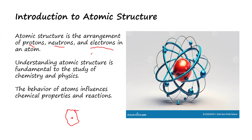So in the atomic structure, it is a structure that tries to show the arrangement of protons, neutrons, and electrons in an atom. Understanding atomic structure is fundamental to the study of chemistry and physics, and the behavior of atoms influences chemical properties and reactions. There are actually a series of chemical reactions that can influence some living organisms and some outside living organisms. And of course, these reactions can be nuclear reactions or chemical reactions.